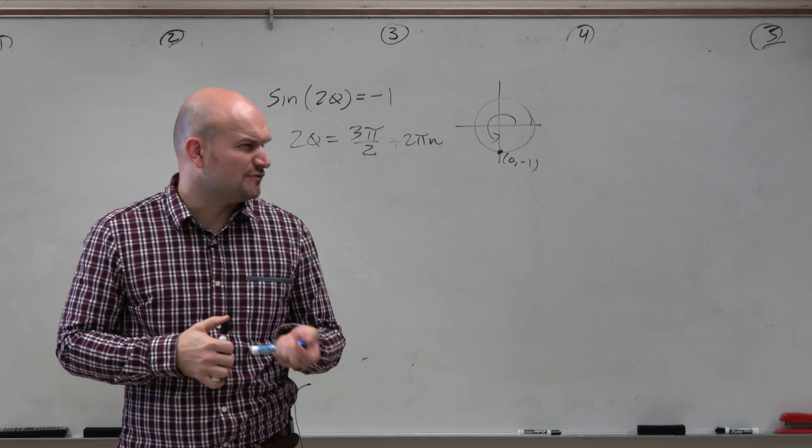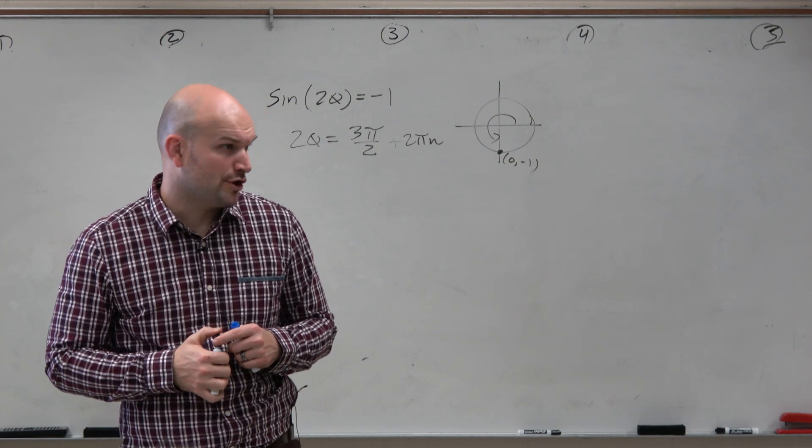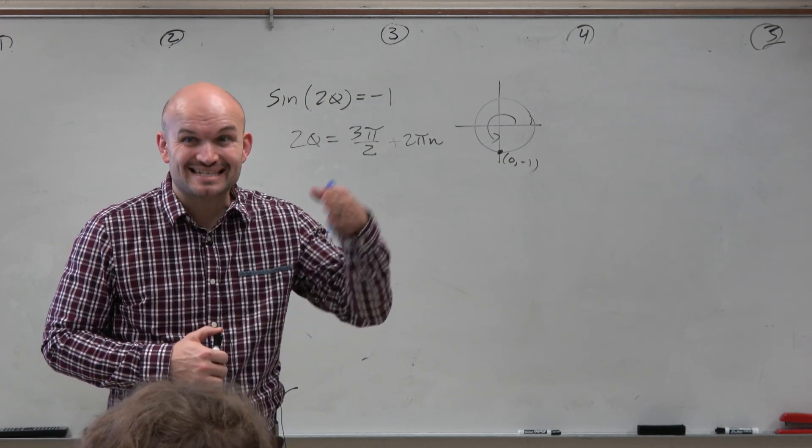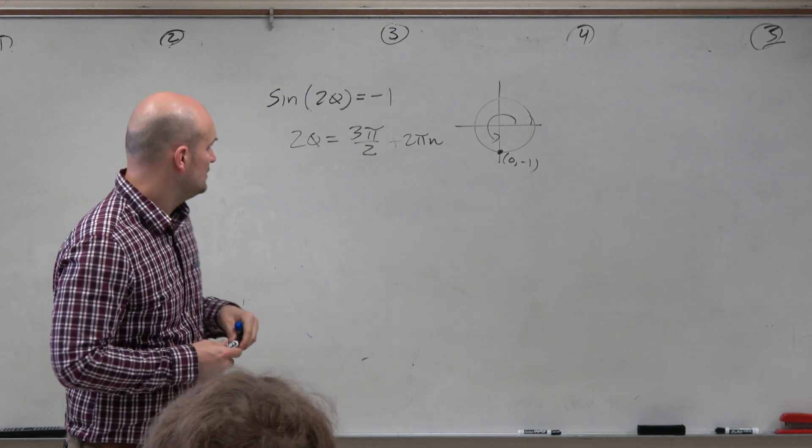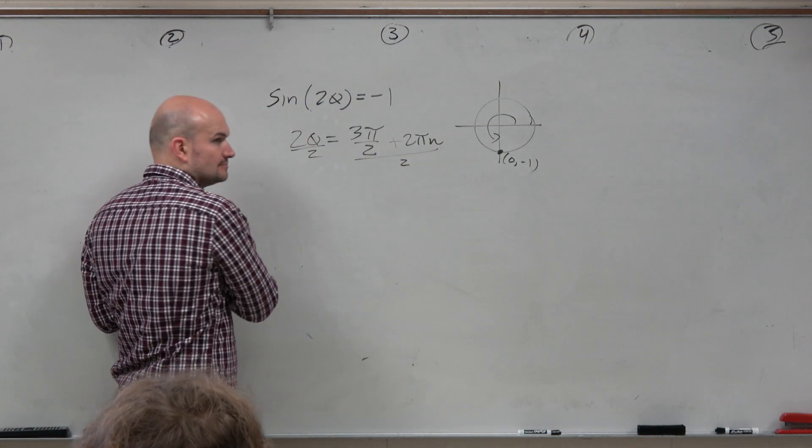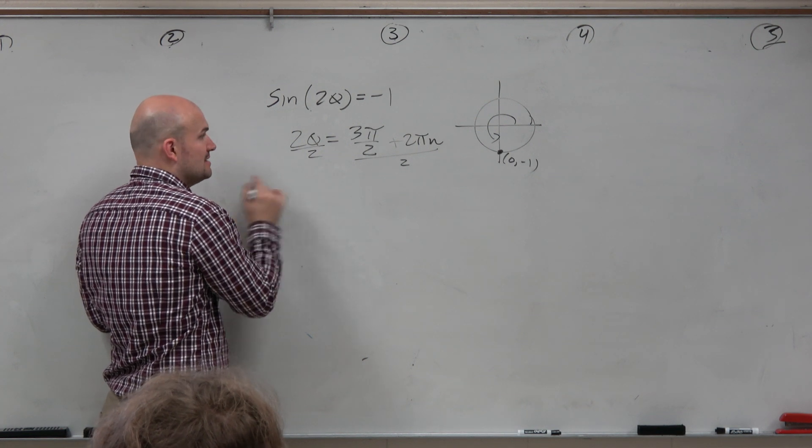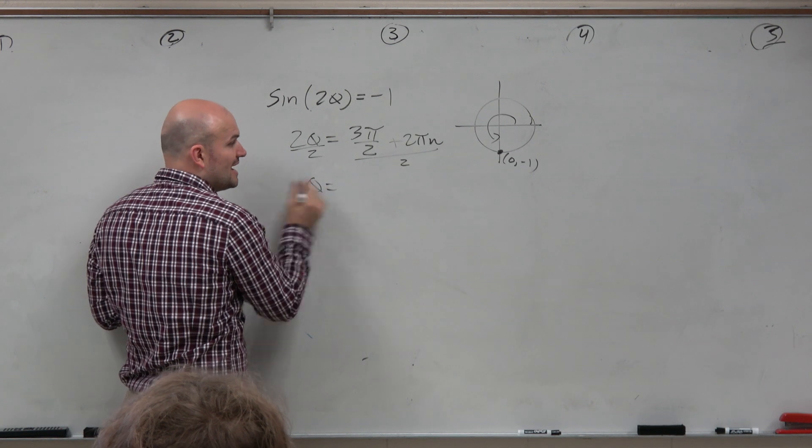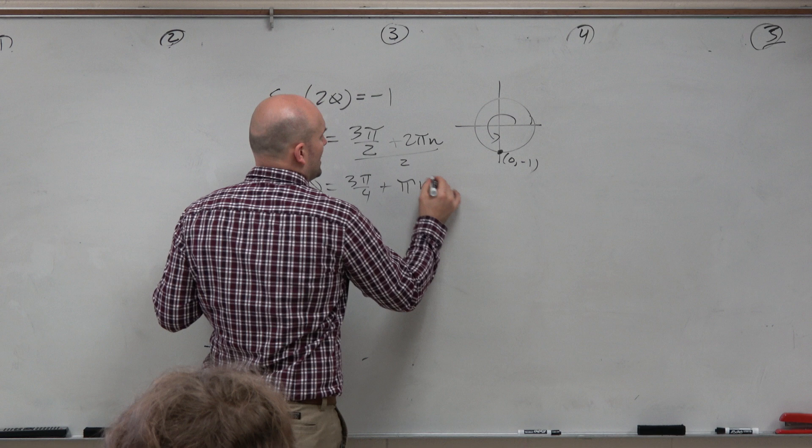But do we ever solve for 2x? Do we ever solve for like 1 over x? No, when we solve equations, we solve for x equals. So our answer is going to be theta equals. So now we just divide by 2. Dividing by 2 is the same thing as multiplying by 1 half. 3 pi over 2 divided by 1 half is going to be 3 pi over 4 plus pi n.